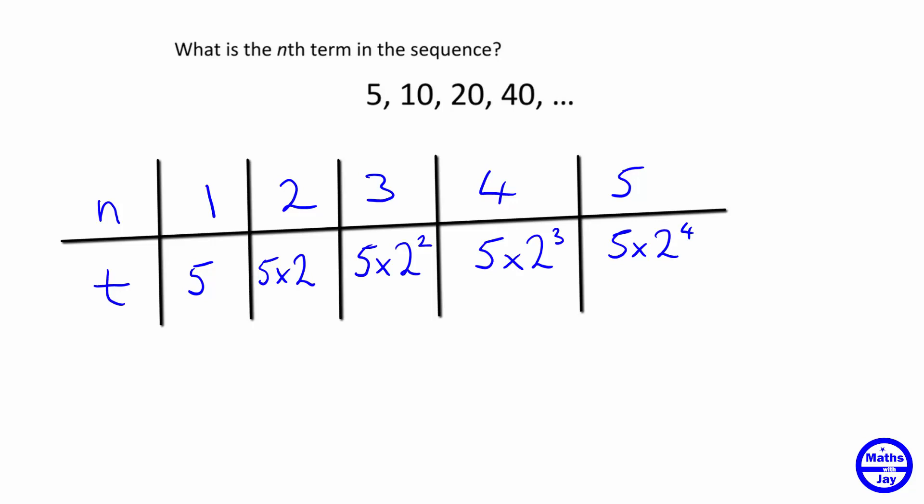So hopefully you can see what's happening now. If we've got the nth term, we're going to say that's going to be 5 times 2, and we can see that each time the power of 2 is 1 less than the term that we're on.